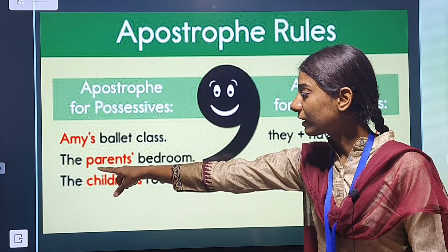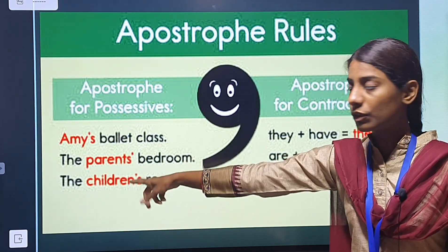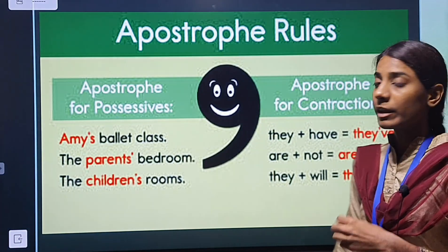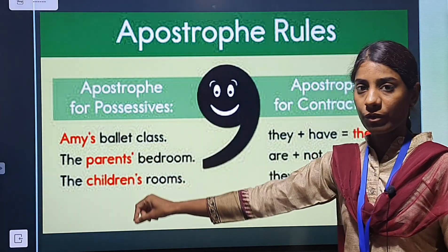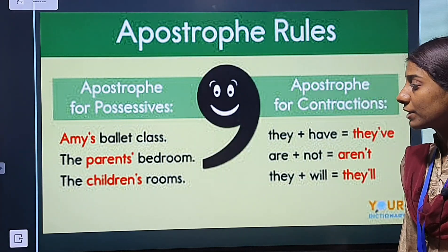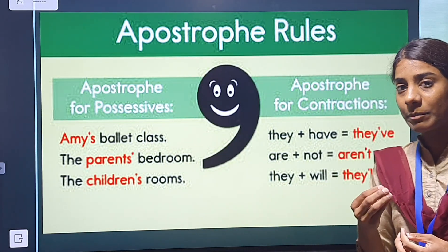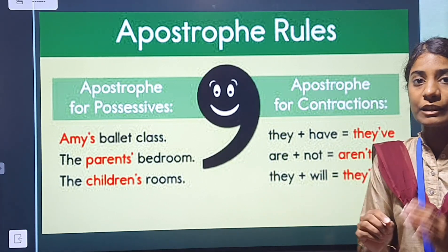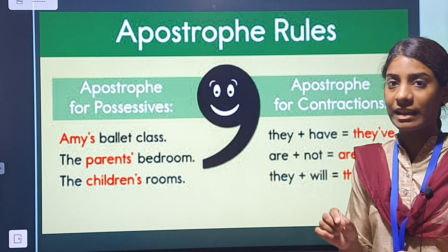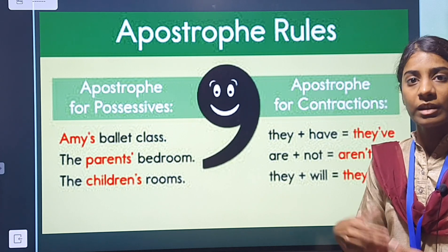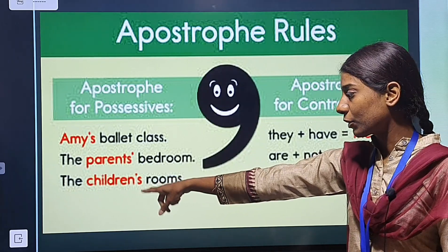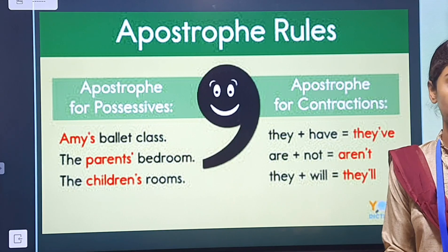The parents' bedroom — now 'parents' is a plural noun, so when writing something in the plural, we place the apostrophe after the plural word but do not add another S. The children's rooms — 'child' is singular and 'children' is already plural, so we write children, then apostrophe, then S. Children's room — bacchyon ka kamra.